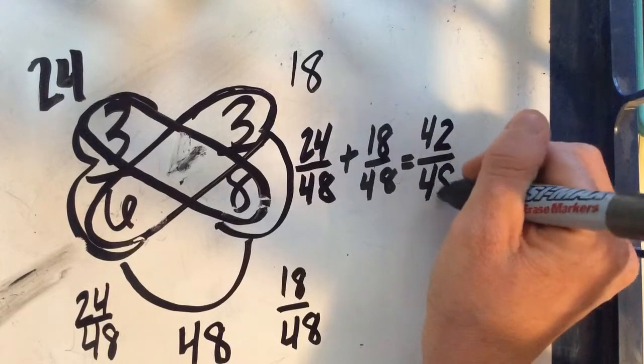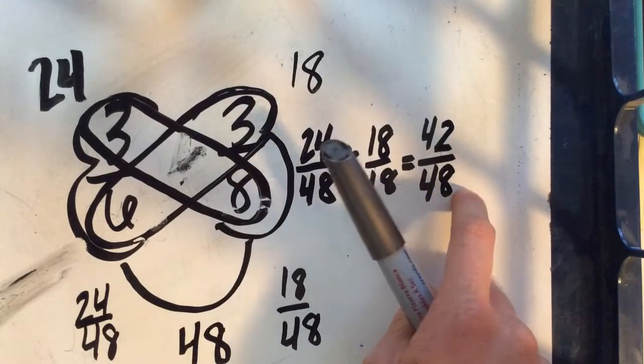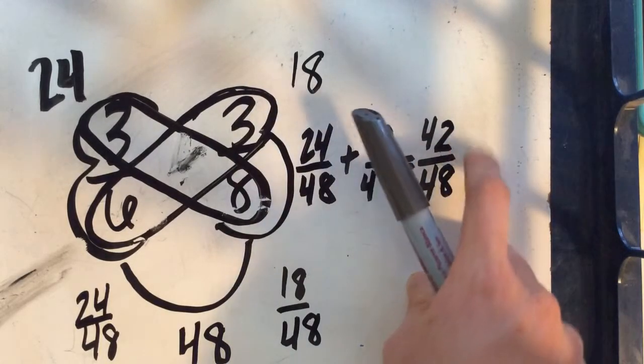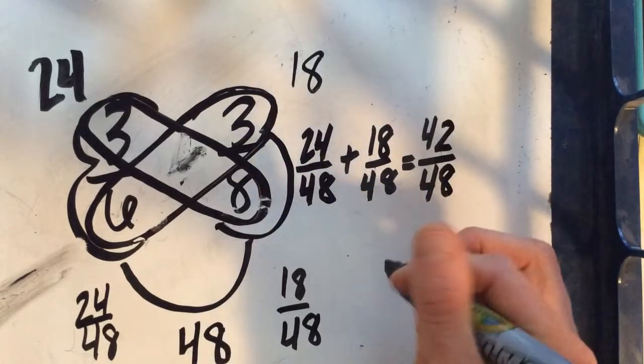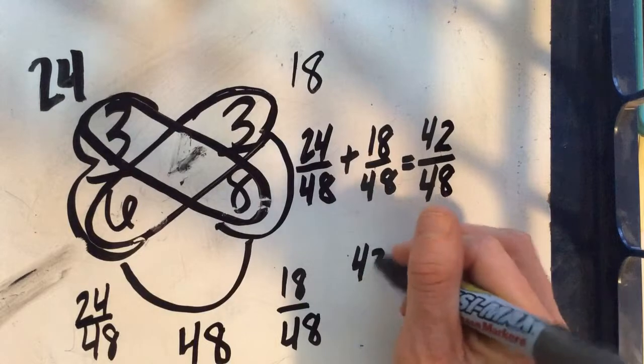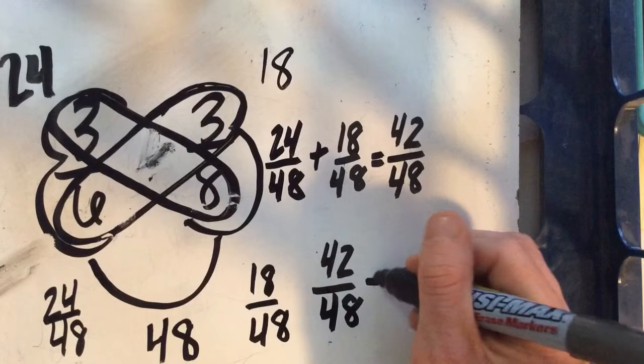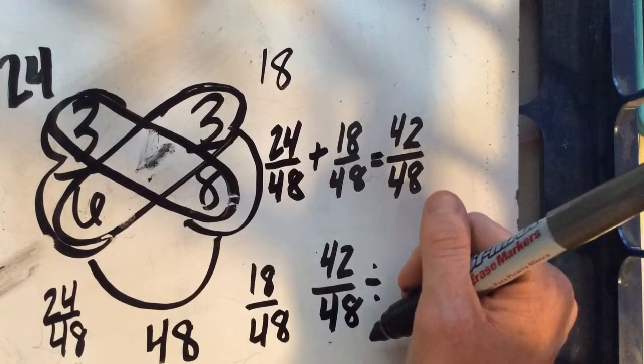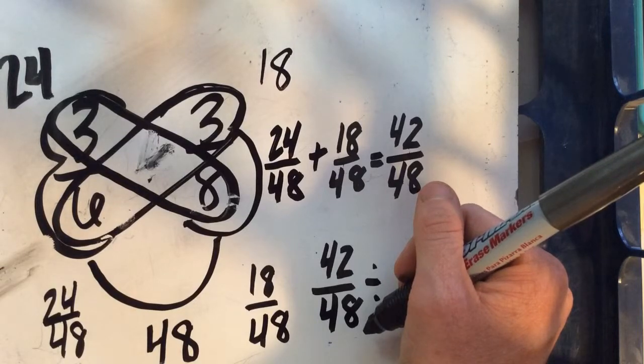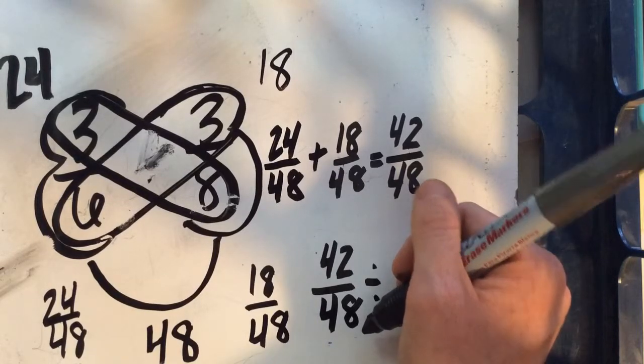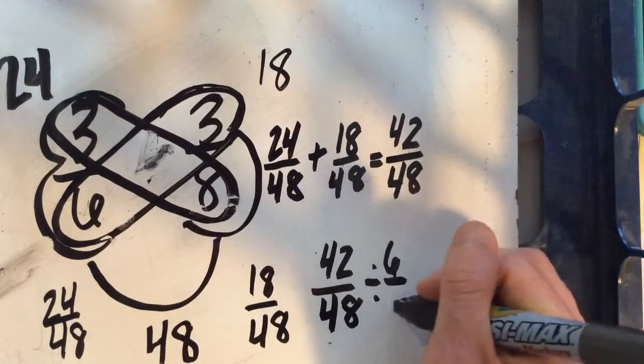42 forty-eighths. And now I know that I can simplify this fraction because both of these numbers can be divided. So this is where we're thinking about our greatest common factor. If you need more practice with that, I would go back and watch the greatest common factor video. But I know that seven times six is 42, and six times eight is 48. So I think six is the greatest common factor.